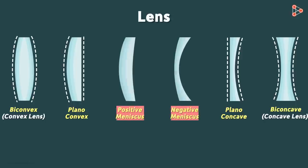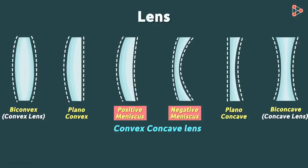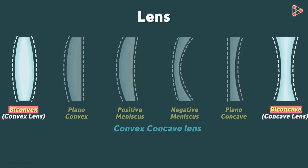What about the remaining two lenses? The name sounds fancy! In these two lenses, one surface is curved inward and one is curved outward. Hence, a meniscus is also called a convex-concave lens. From all the types above, we are interested in only biconvex and biconcave lenses, also referred to as convex and concave lenses.